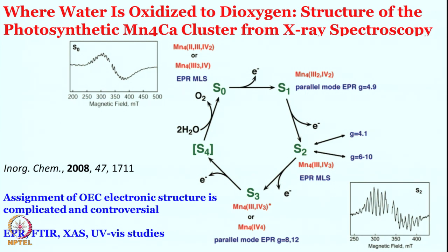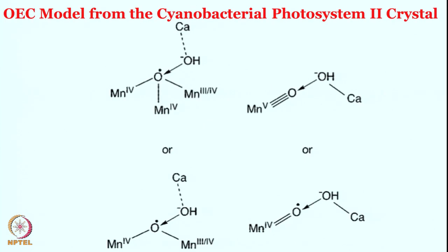Today let us try to see what happens to these intermediates, what are the oxidation states, and what is the proposed intermediate for water-to-oxygen formation. One of the key steps that we are interested in is the oxygen-oxygen bond formation. Because if water has to give oxygen, there would be a step where O-O bond formation takes place.